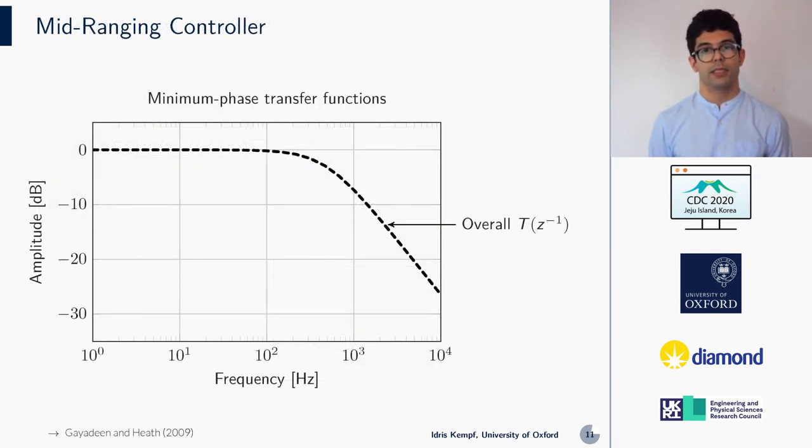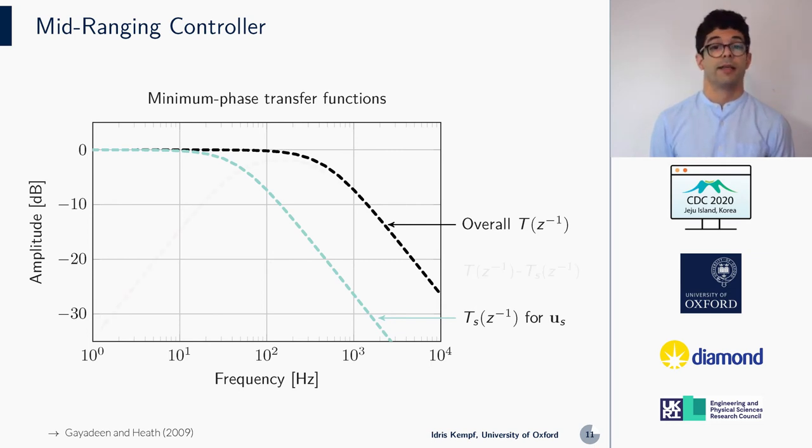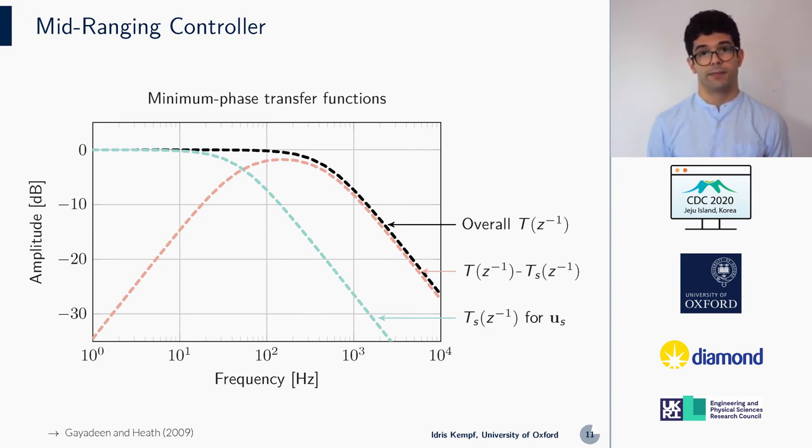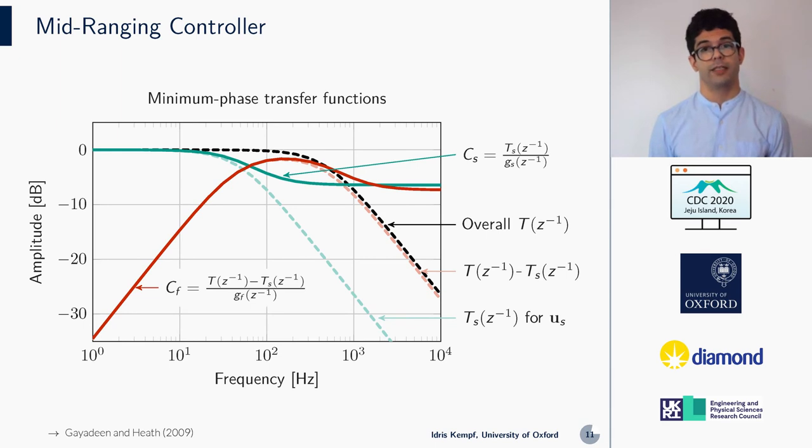For the controllers of the two input single output systems, we use a mid-ranging approach. This approach is well suited for the case that our actuators have different bandwidths with a limited actuation range. For mid-ranging control, one first chooses an overall complementary sensitivity function T, which defines the overall bandwidth the SISO system will cover. Second, one chooses TS for the slow actuators that is adapted to their bandwidth. Third, one computes the difference between T and TS. The controllers for the slow actuators are obtained from dividing TS by the slow actuator dynamics GS, which yields the green curve. The controllers for the fast actuators are obtained from dividing the difference between T and TS by the fast actuator dynamics GF, which yields the red curve. Using this approach, the overall transfer function T is split between slow and fast actuators. The slow actuators take over the low frequencies, while the fast actuators take over the higher frequencies.